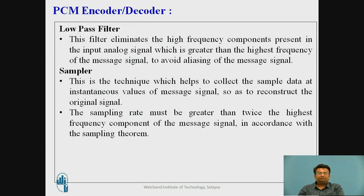The steps are as follows. The low-pass filter eliminates the higher frequency components present in the input analog signal. The sampler collects data at instantaneous values of the message signal. In order to reconstruct the original signal, the sampling rate must be greater than twice the highest frequency component of the message signal, in accordance with the sampling theorem.